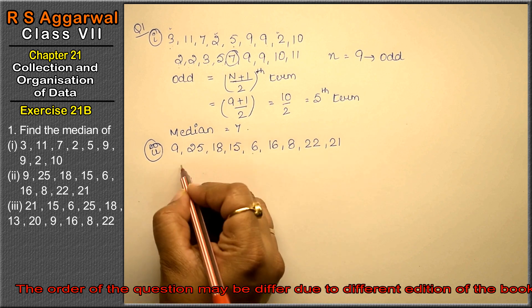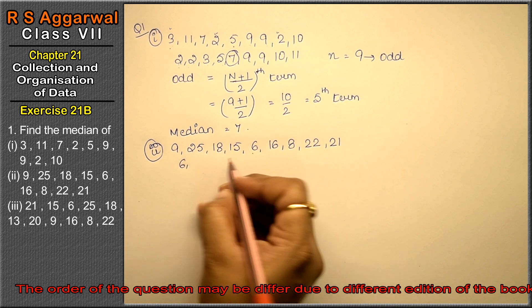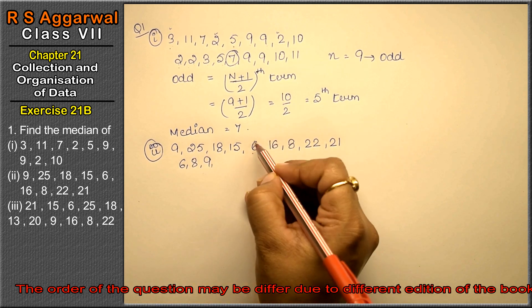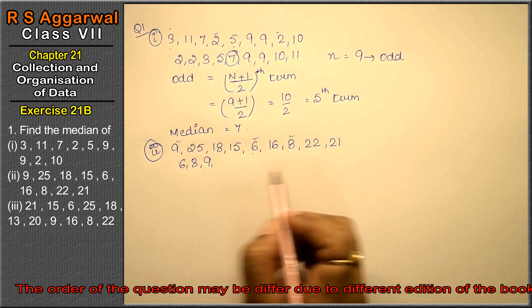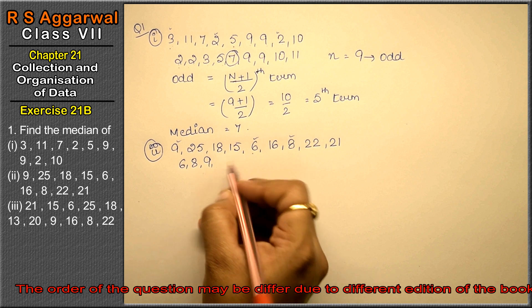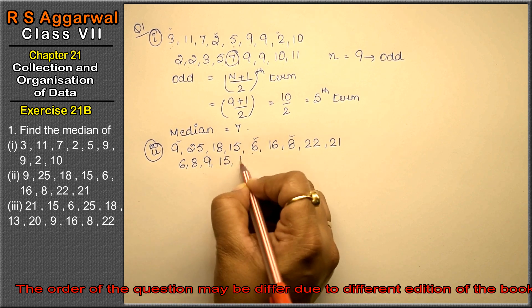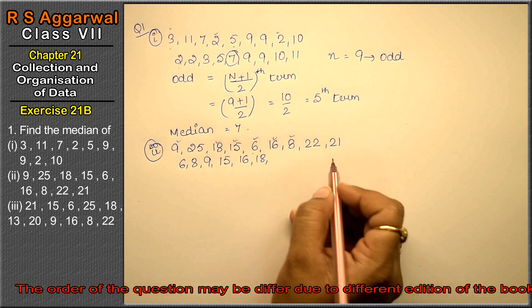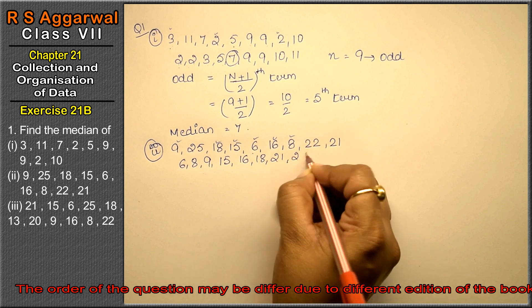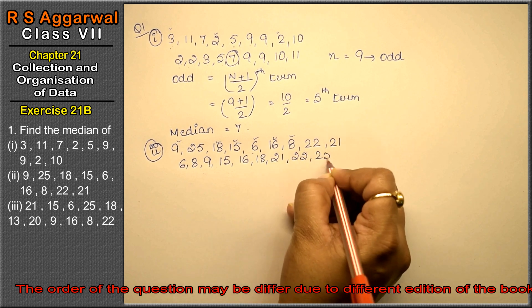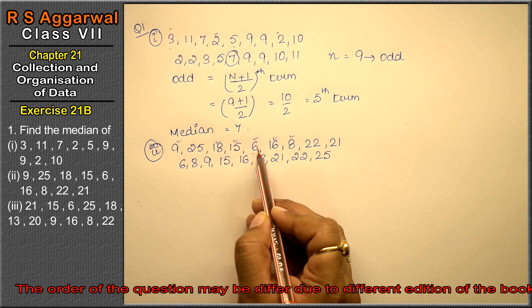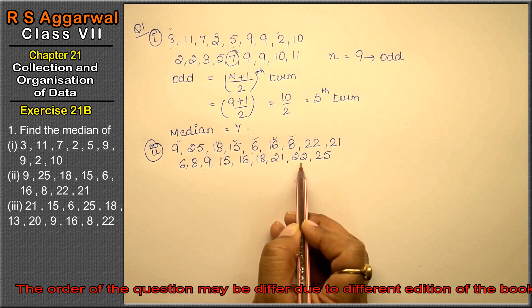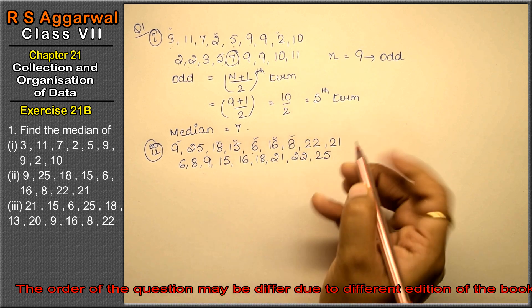What is it? 6, then 8, then 9, then 15, 16, 18, 20, 21, 22, 25. Counting: 1, 2, 3, 4, 5, 6, 7, 8, 9.